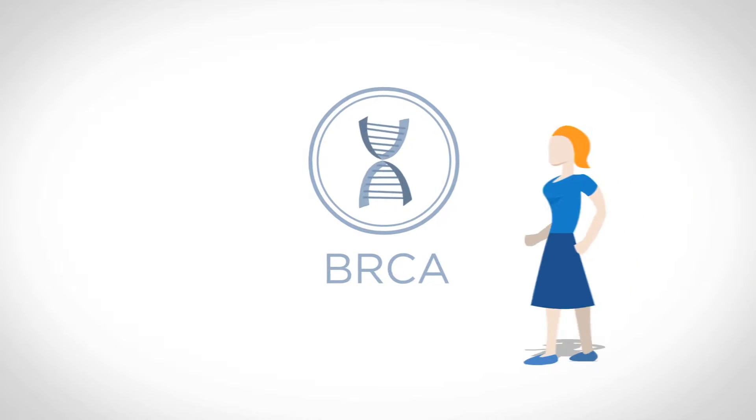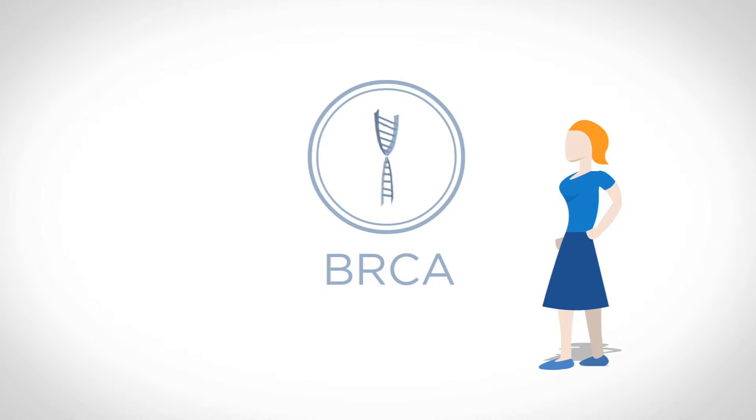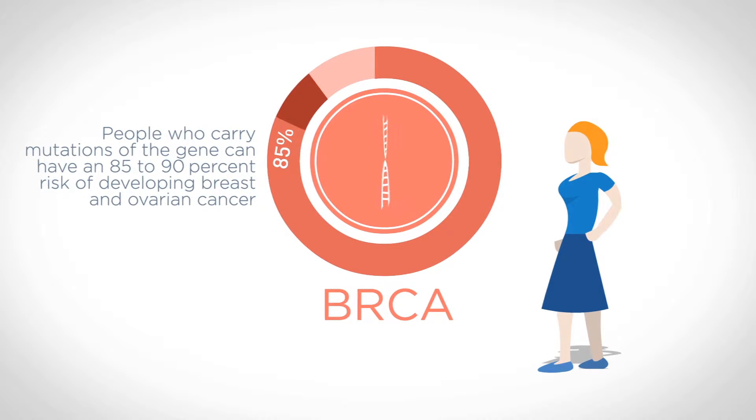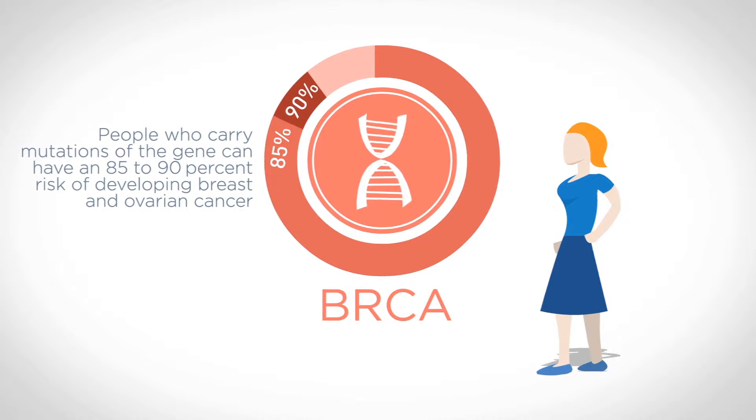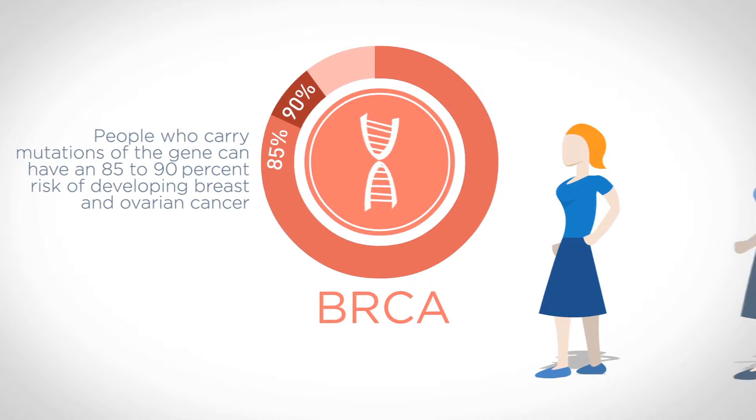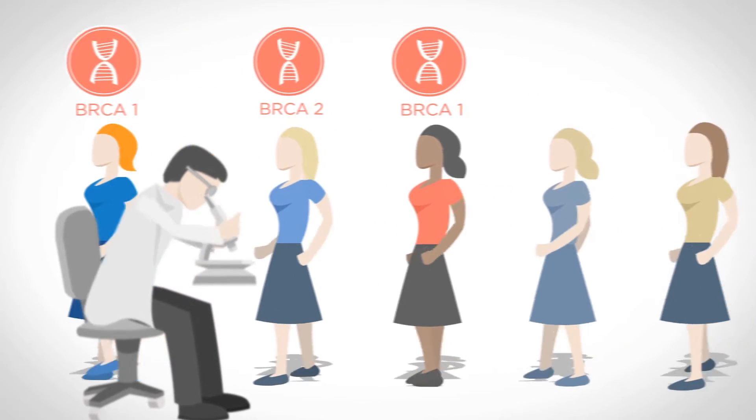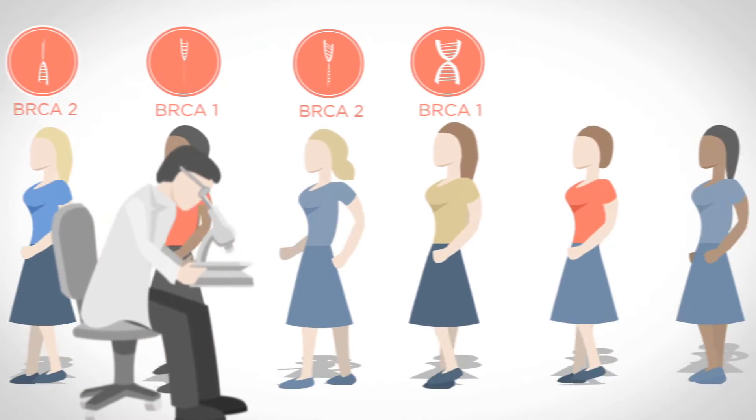BRCA is a normally occurring gene found in breast and other tissue. People who carry mutations of the gene can have an 85 to 90 percent risk of developing breast and ovarian cancer. This is why doctors like to run tests on at-risk women to see what form of the gene they have.